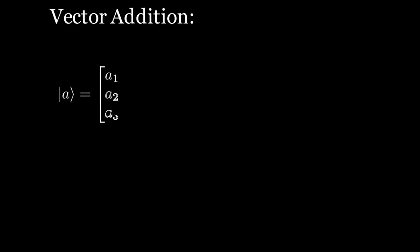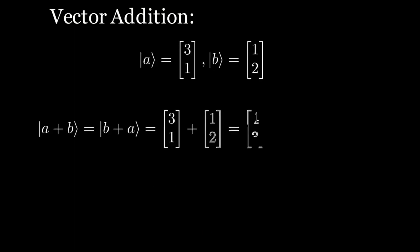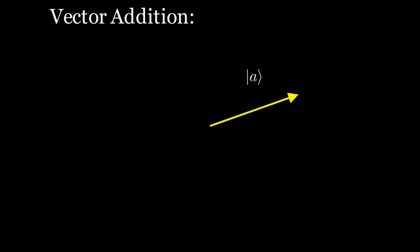Now let's look at vector addition. Given two vectors that have the same type — both bras or both kets — and the same dimension, we can add them to get a new vector of the same type and dimension. The first entry comes from adding the first entries, the second entry from adding the second entries, and so on. For example, adding vectors a and b gives the resultant vector (4, 3).